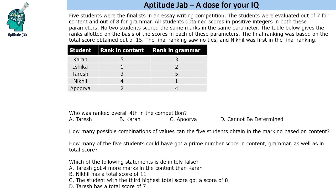Hello everyone, welcome to Aptitude Jab. This problem states that there are 5 students who were finalists in an essay writing competition. They were evaluated on 2 parameters: content and grammar. The maximum marks were 7 in content and 8 in grammar.